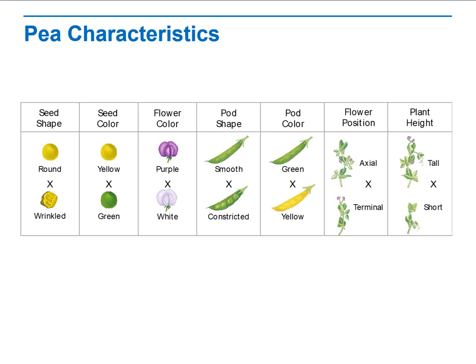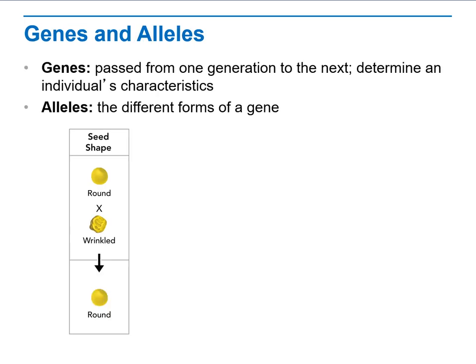Regarding genes and alleles: genes are passed from one generation to the next and give the individual its characteristics. Alleles are the different forms of a gene — for example, whether a trait is round or wrinkled, or long or short. That is the difference between genes and alleles.